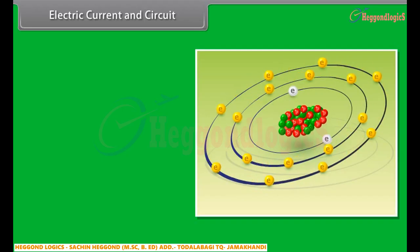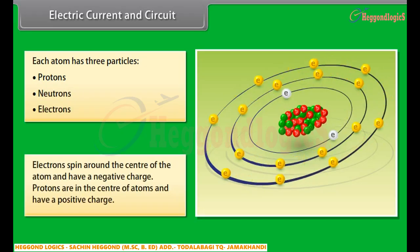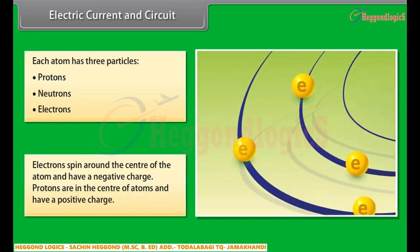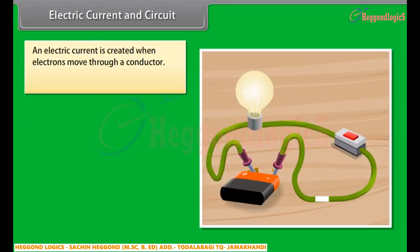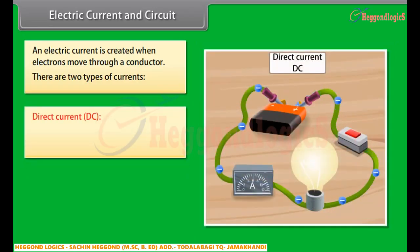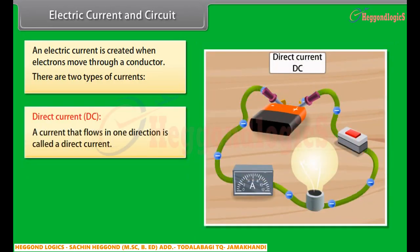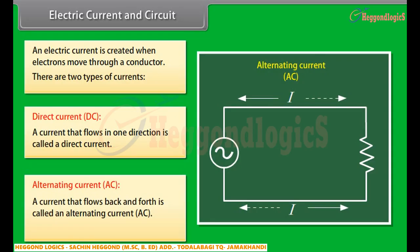All things around us are made up of atoms. Each atom has three particles: protons, neutrons, and electrons. Electrons spin around the center of the atom and have a negative charge. Protons are in the center of atoms and have a positive charge. An electric current is created when electrons move through a conductor. There are two types of currents. Direct current (DC): a current that flows in one direction, for example a battery produces a direct current. Alternating current (AC): a current that flows back and forth. The symbol of electric current is I.